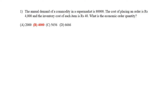Whenever this kind of question appears in competitive exams, most of the time we think it is very difficult, but it is very easy if we remember the correct formula. The economic order quantity can be found using the formula: Q equals under root of (2DS / IC).